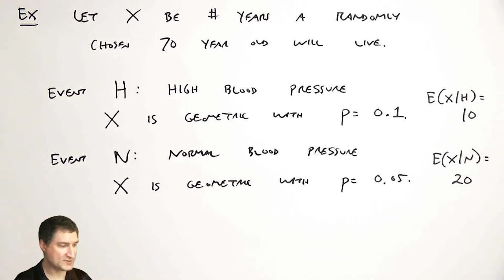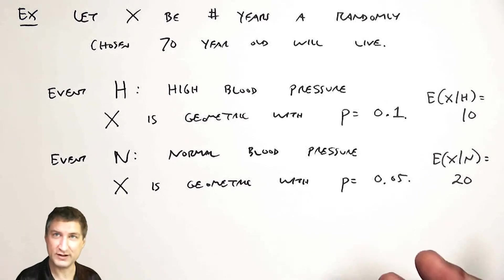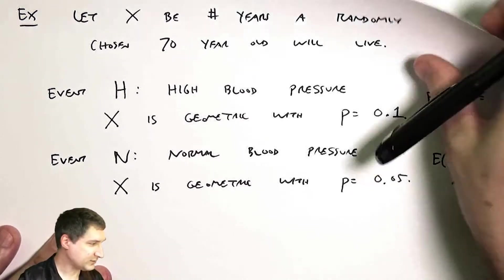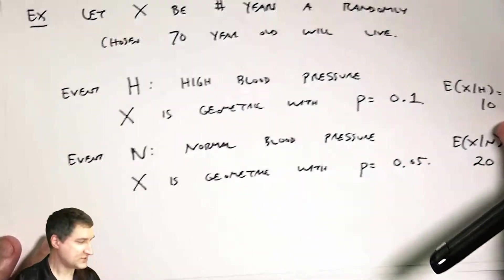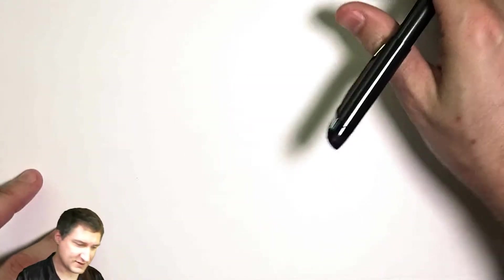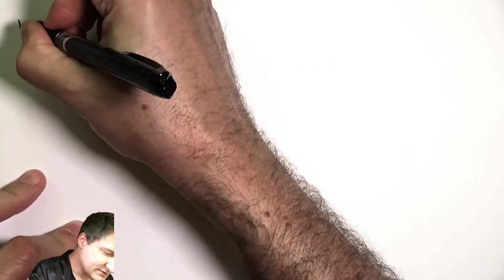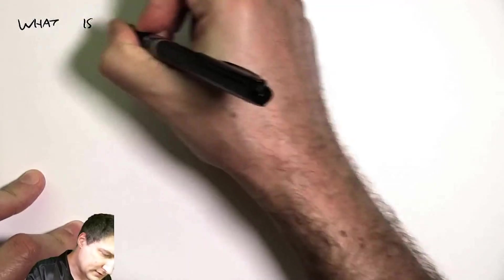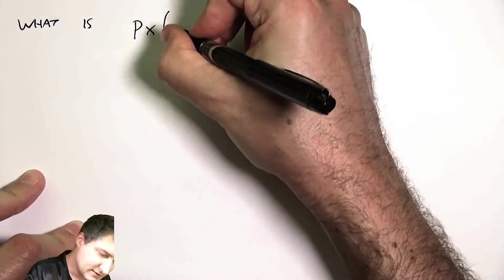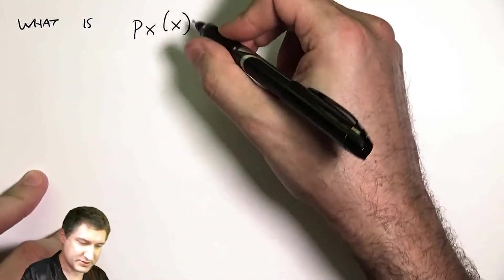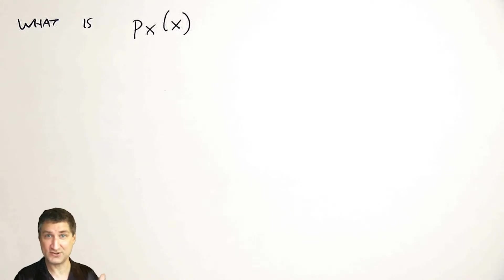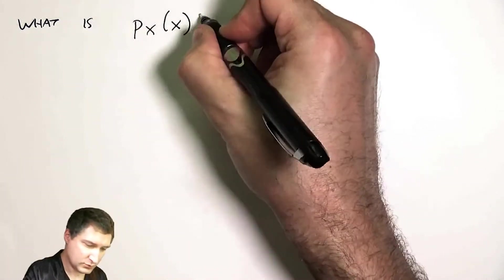And so now I can ask, what is the expected value of X over the whole population? So there are a couple ways I could do this. First of all, I could say, what is the probability distribution of X as a whole random variable?